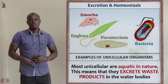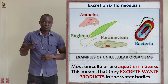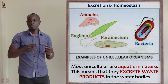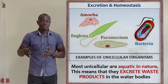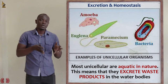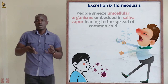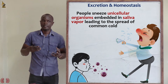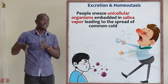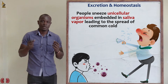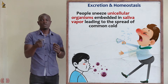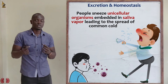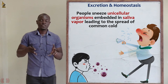Most unicellular organisms are aquatic in nature. It is very difficult to find a unicellular organism existing in the atmosphere for long. They will either survive in water or in moist and damp areas. That is why during cold seasons, people commonly get colds or flu — because the moist environment allows unicellular organisms, basically pathogens, to be suspended in the atmosphere alongside water vapors.